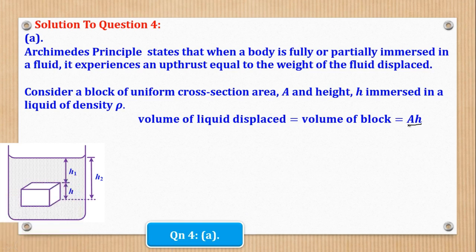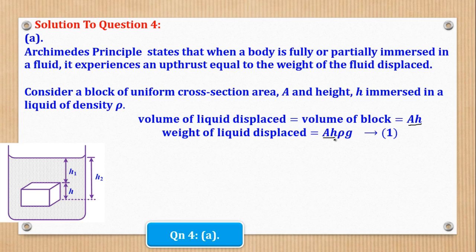When the body is immersed in a liquid, the volume of the liquid displaced will be equal to the volume of the block, and is equal to cross-section area times height. This will be the volume of the liquid displaced. Now that we know the volume, we can easily get the weight because mass equals volume times density. The weight of the liquid displaced will therefore be A·H·rho·g.